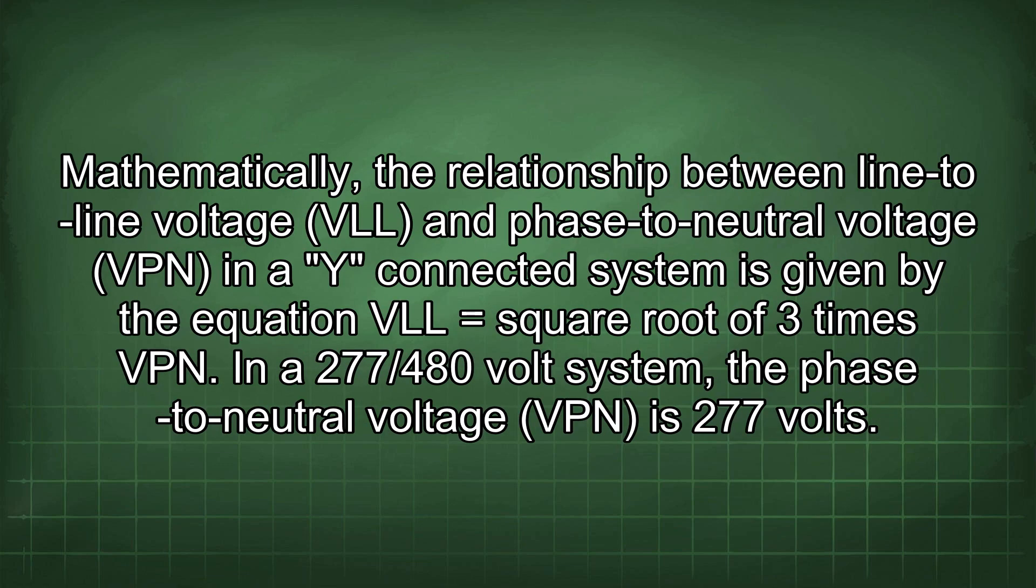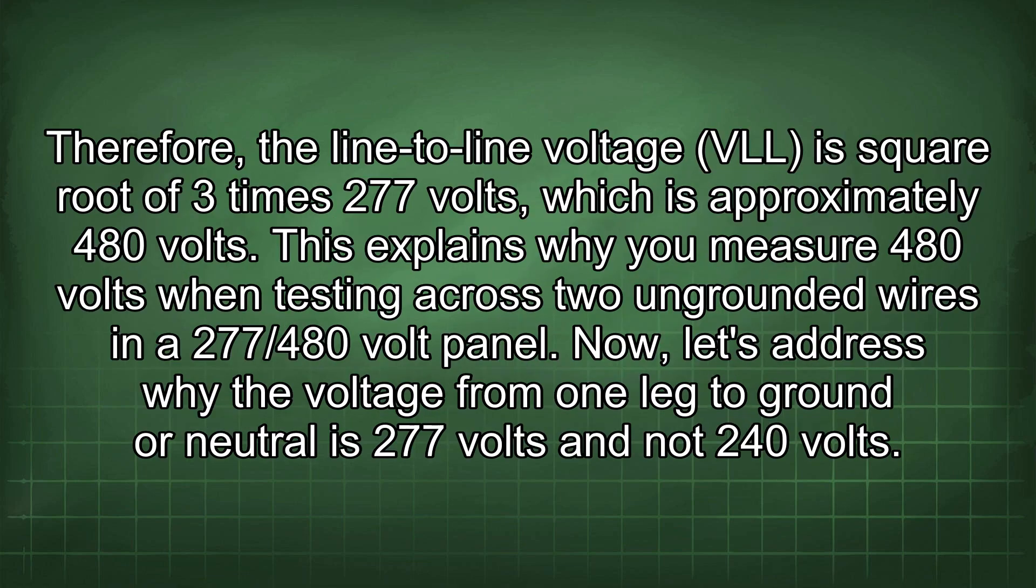Mathematically, the relationship between line-to-line voltage VLL and phase-to-neutral voltage VPN in a Y-connected system is given by the equation VLL = √3 × VPN. In a 277/480 volt system, the phase-to-neutral voltage VPN is 277 volts. Therefore, the line-to-line voltage VLL is √3 × 277 volts, which is approximately 480 volts.